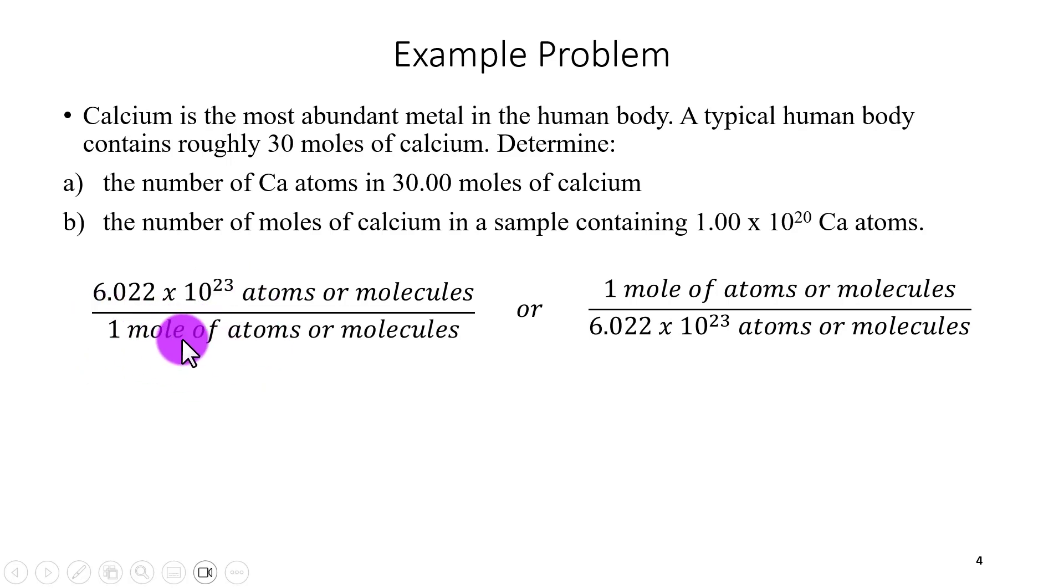So I pick out of these two, I pick the one that will have moles at the bottom and atoms at the top, which is this one here. Because I have one mole at the bottom which will cancel with my moles of 30 moles up here, and then at the top I have atoms or molecules and I want to end up with that.